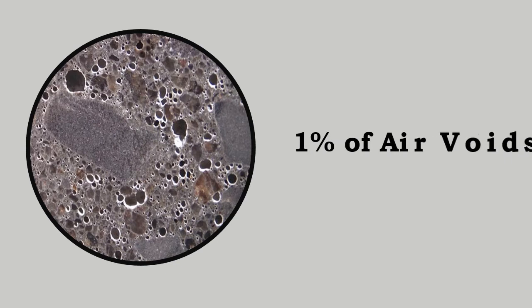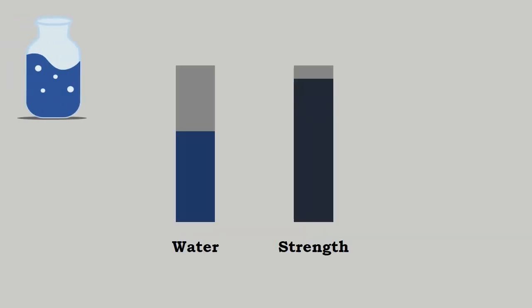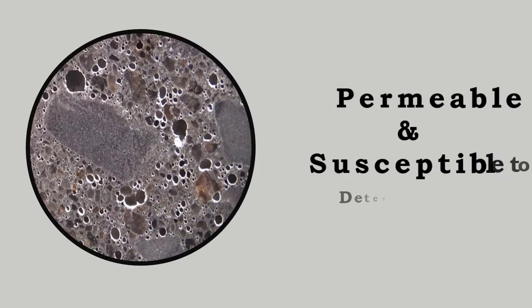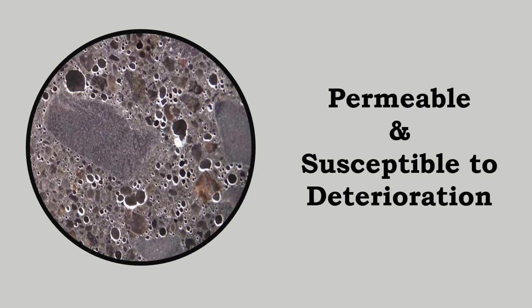However, the hardened concrete contains about 1% of air voids. If the water used is more than the optimum water required for maximum strength of concrete, the concrete becomes permeable and susceptible to deterioration.